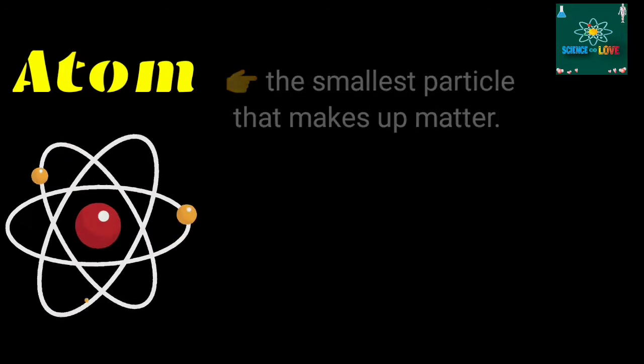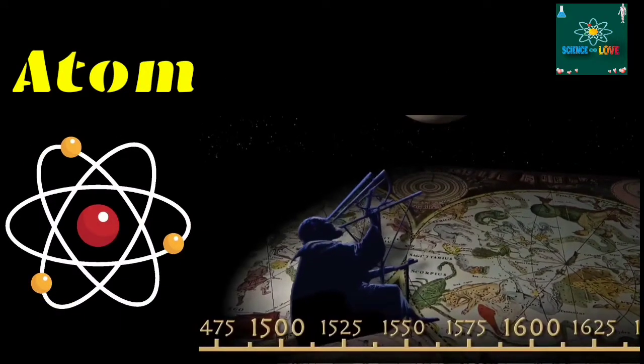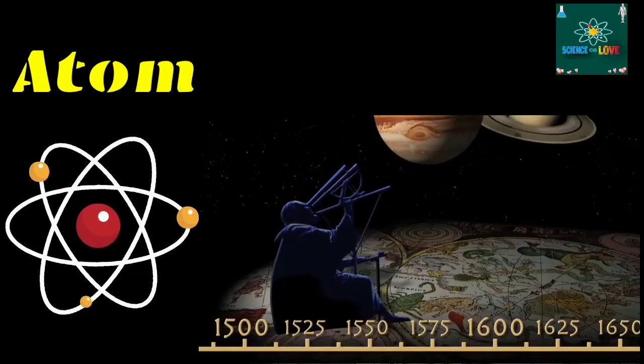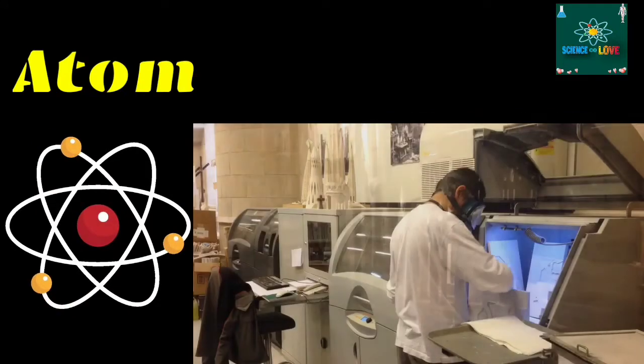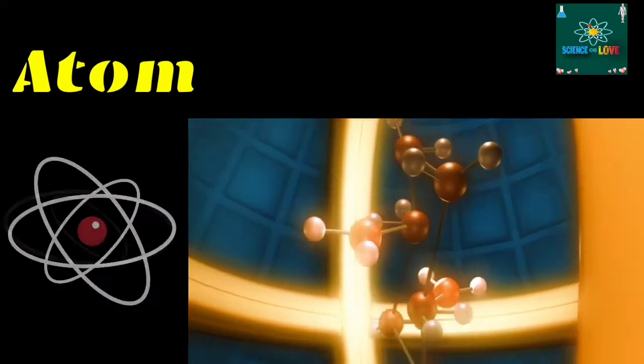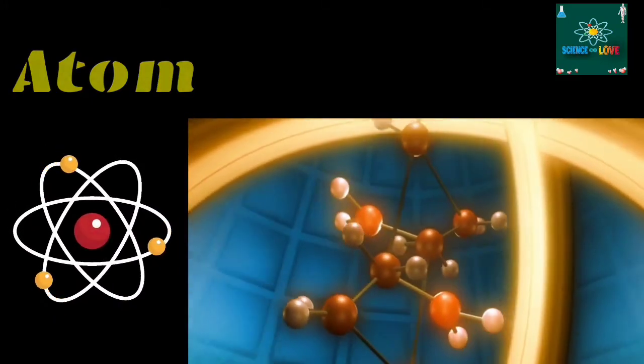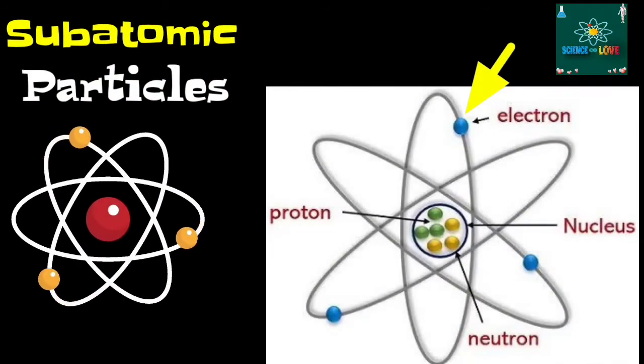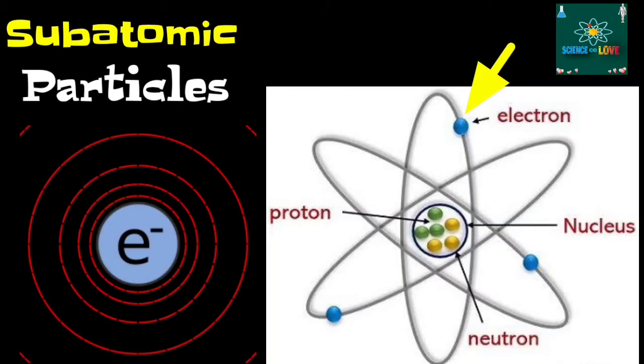For decades, scientists have been gathering evidence about its structure. Their studies led to the conclusion that atoms are mostly empty space, and they have three major subatomic particles. The first is the electrons, the negative part of the atom, travel in random paths around its central part,